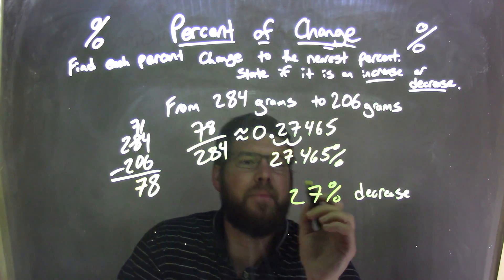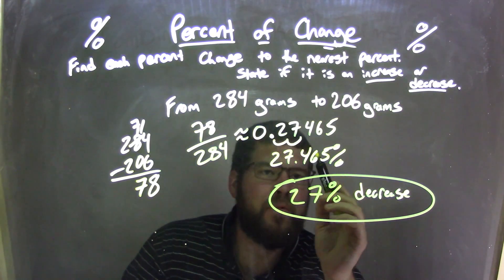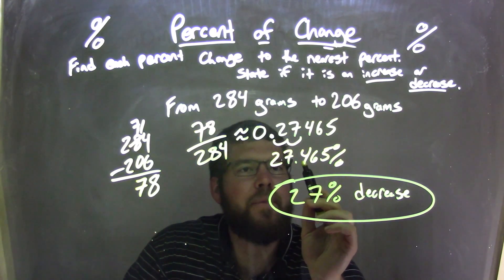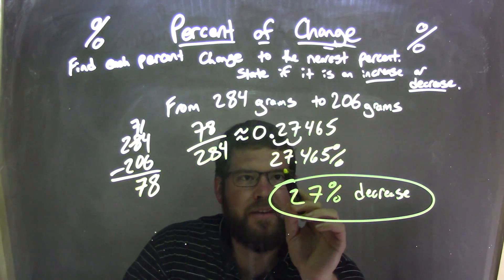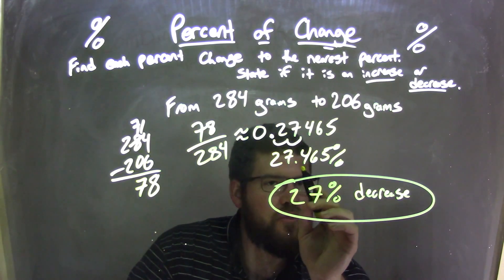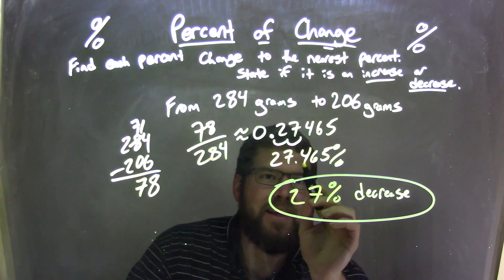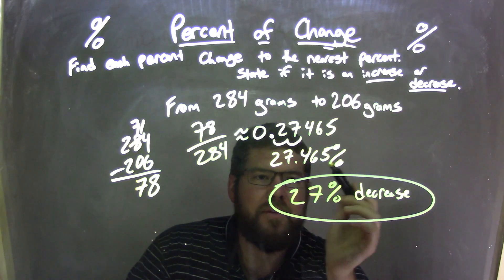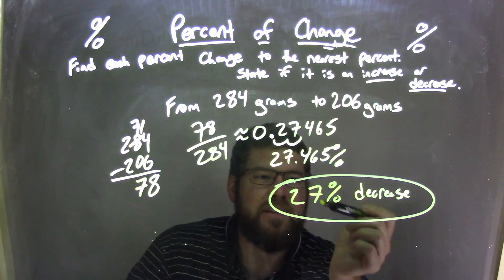So, that 27.465 comes out to be 27% decrease in general, okay? Now, be careful. You can't round twice. So, don't think that the 6 makes the 4 go up, and then that 5 causes the 7 to go up. That's incorrect. We just look at the number right beforehand. That is the 4. The 4 causes the 7 to round down, so it stays the 7.